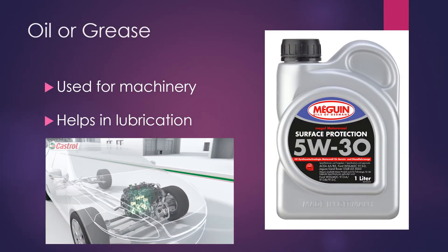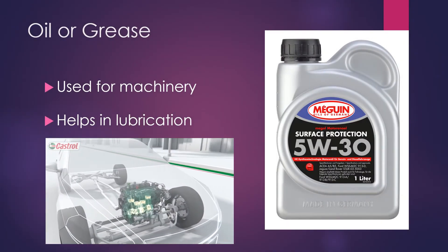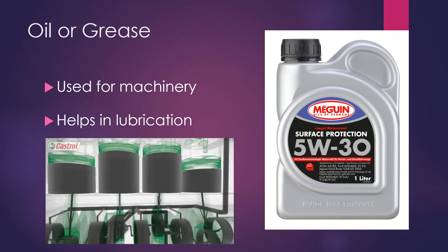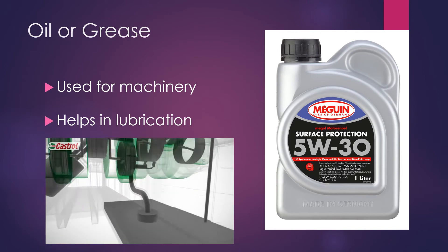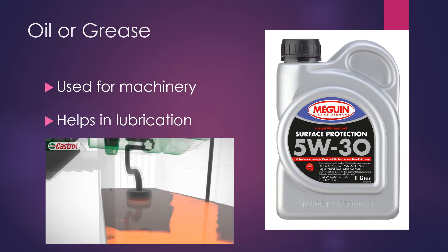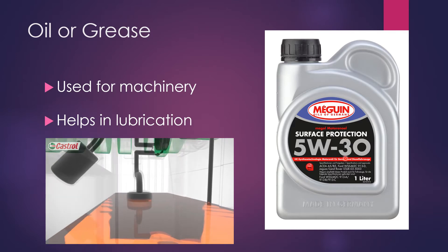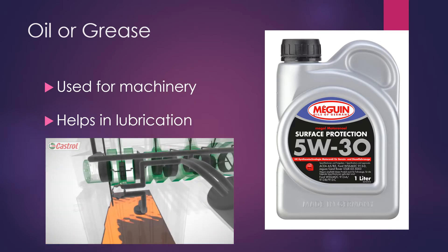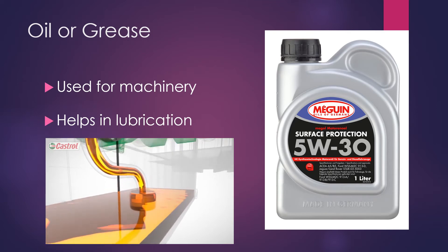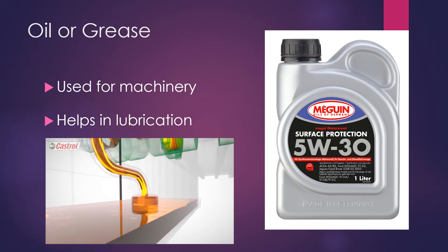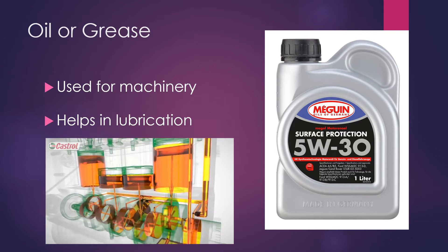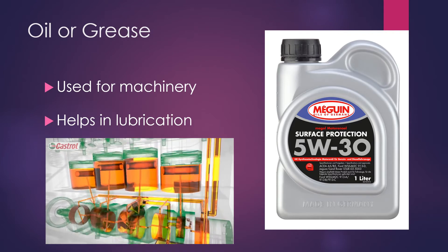Next is oil or grease. This is used for machinery and helps in lubrication. Motor oil will be put in the engine to reduce friction, help in lubrication, and also protect the engine from corroding.